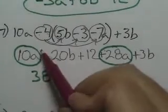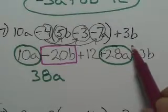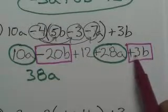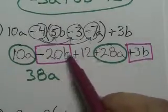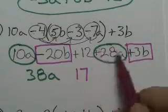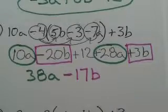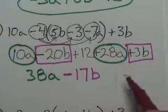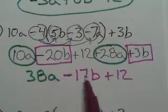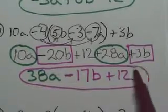Now do the b's. I have negative 20b and positive 3b. Negative 20 and positive 3 — they're different signs, so you have to subtract. Twenty take away three would be 17. And there's more negative, so that's negative 17b. And then I have just a plus 12 left over — and that's it. These are unlike terms, you cannot combine them. This has a's, this has b's, this is just a constant. That is your answer.